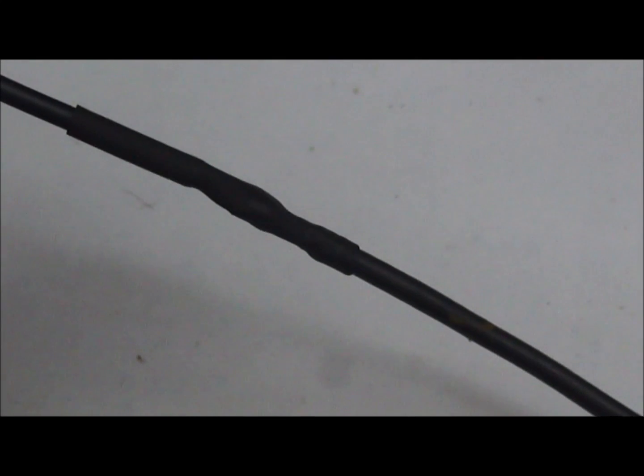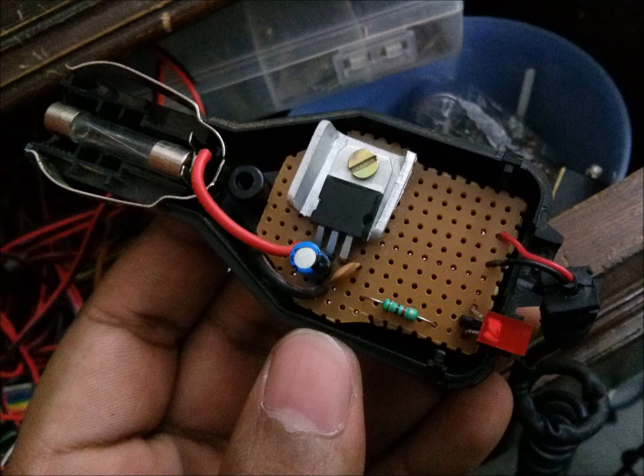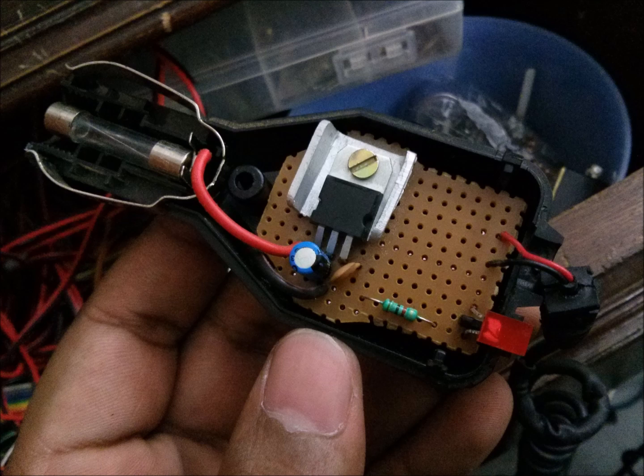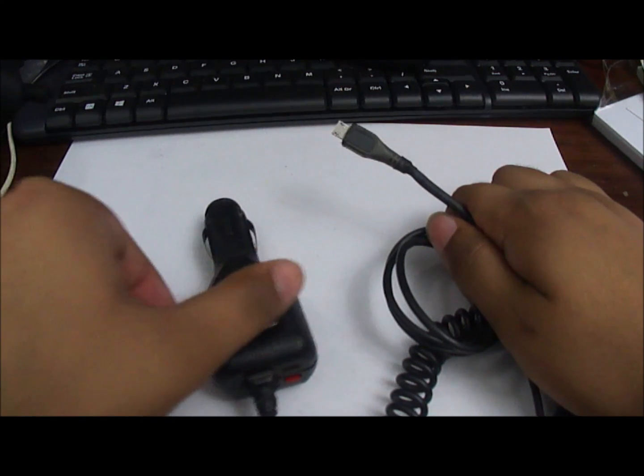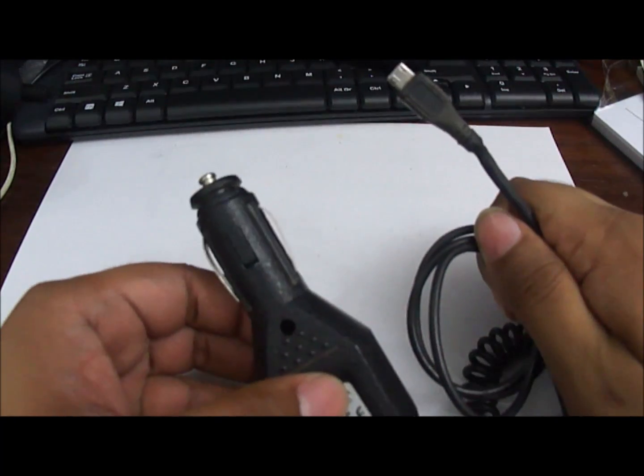And we are done. If you want you can do the same circuit on a general purpose PCB, add a heat sink and an LED. This is how my DIY charger looks after completion.